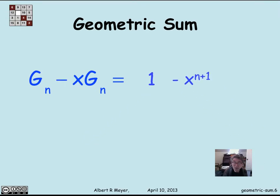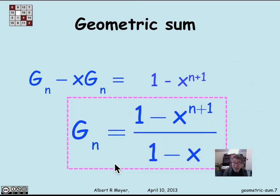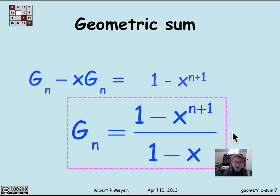We have this nice, elegant formula. Factoring out g_n, we get g_n times (1 minus x) on the left, and the result is that g_n equals (1 minus x to the n plus 1) over (1 minus x). This is a formula we proved before by induction, but by induction there was no clue about who was clever enough to think of it — now you know how that person found it. It's a standard trick called the perturbation method: take the sum, perturb it a little, see how it relates to itself, get an arithmetic relation, and solve for the sum.